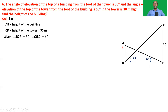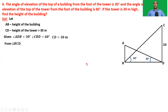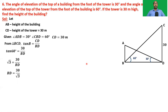We have to find the height of the building AB. To find AB, first we need to find BD, which is the common side in both triangles ABD and BCD. From triangle BCD: tan B = CD/BD, so tan 60 = 30/BD, giving √3 = 30/BD. Therefore BD = 30/√3 = 10√3 meters.